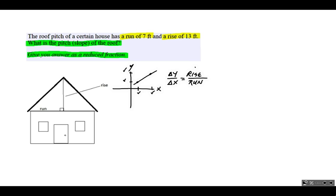The problem gives us the rise equals 13 feet. So our change in y, or our rise, is 13. Put that over the run, which is described in the problem as 7 feet.